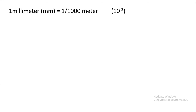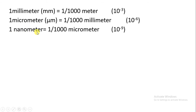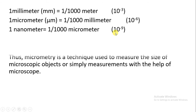Let's talk about some dimensions and scales. One millimeter is equal to one upon thousand meter, which we can say 10 raise to minus 3. One nanometer is equal to 10 raise to minus 9. Micrometry is a kind of technique which helps us to measure the size of a particular microscopic object or microscopic organism by simply measuring them with the help of a microscope.